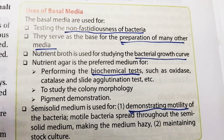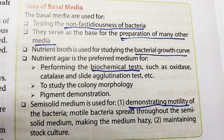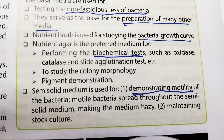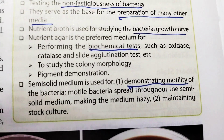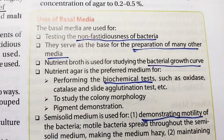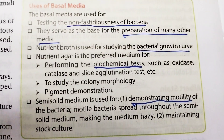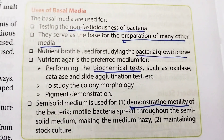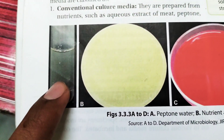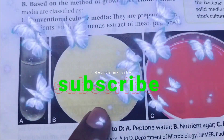Simple basal media is used for biochemical tests like oxidase test, catalase test, and slide agglutination test, and also for the study of colony morphology and pigment demonstration. Semi-solid medium is used for demonstrating the motility of bacteria and for maintaining stock cultures, since bacteria cannot be stored in a laboratory for a long period of time. Here you can see the peptone water and nutrient agar, which is pale yellowish in color.